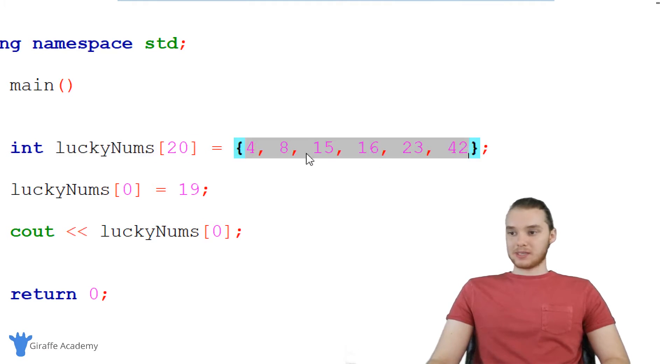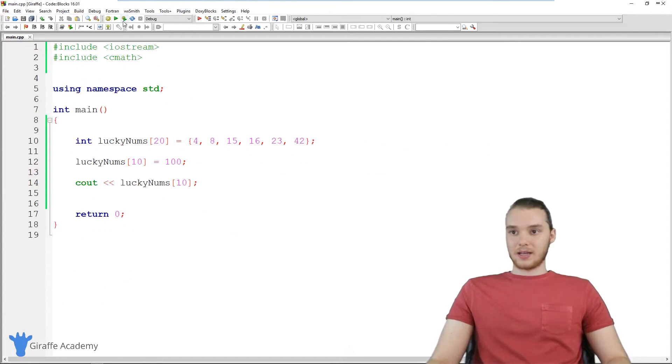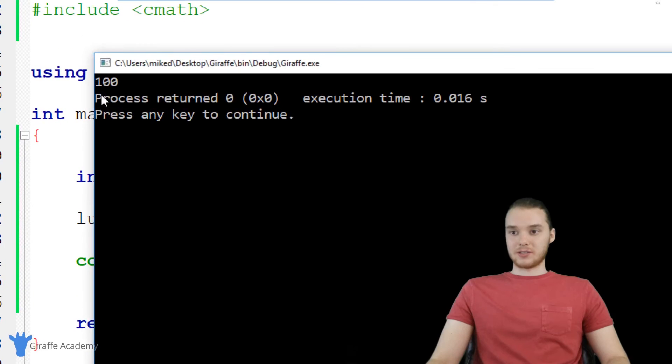So over here, I don't have 20 elements yet. I only have elements zero, one, two, three, four, five. So what I could actually do is I could add more elements into here. So I could say like lucky nums six, or lucky nums 10, and I could give this a value. So I could give lucky nums 10 the value of 100. And now down here, if we print out lucky nums 10, it's going to be printing out 100. As you can see.